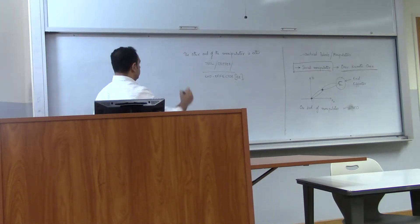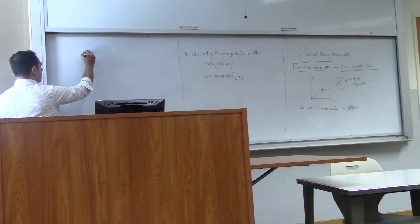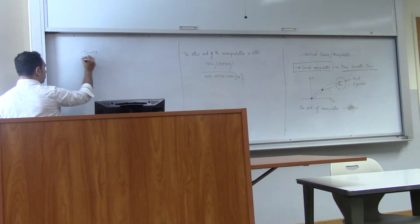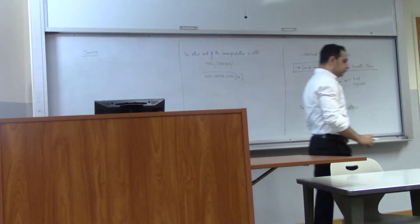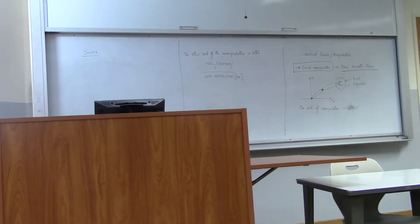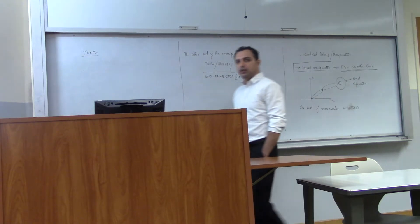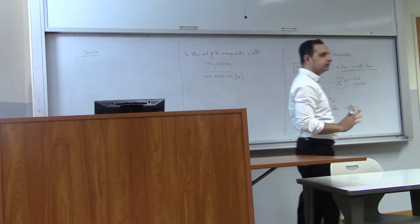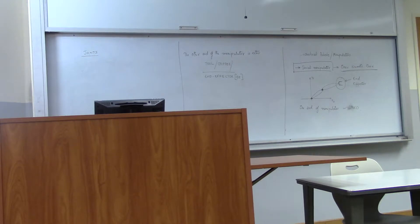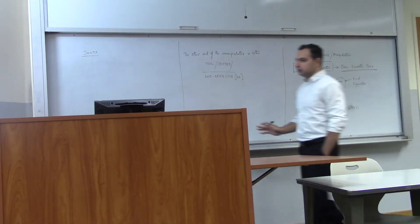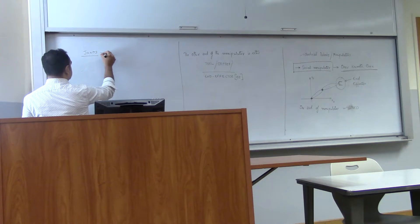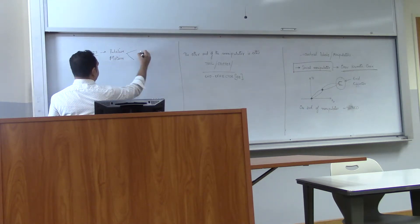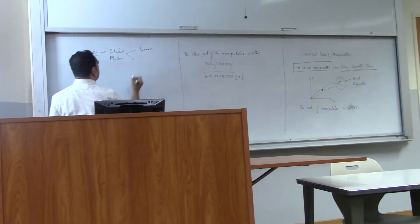Let's talk about joints. Joints give you the option of creating relative motion between two adjoining links. What type of relative motion can we create between two links? Those are two basic forms of motion: one is angular motion and the other one is linear motion. They can have relative motion — it could be linear motion or it can be angular motion.